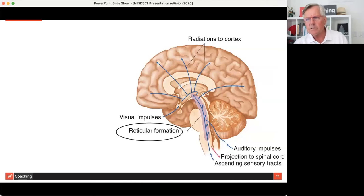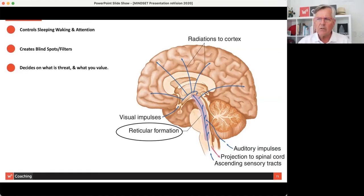Let me explain something called the reticular formation. It's that area that's sort of purplish - it's the center of one of the most primitive parts of the brain. All of our senses - sight, smell, touch, etc. - they all get processed by the reticular formation. And why does this matter? Well, the reticular controls what you pay attention to, creates blind spots or filters, decides what's a threat, what you value.